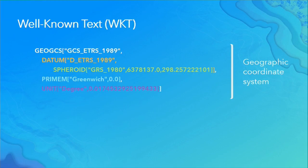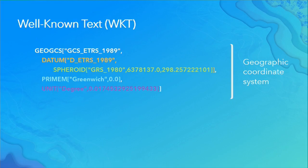In well-known text, this is a string representation of a coordinate system, and it is the only way you can specify a custom, non-predefined coordinate system. For a geographic coordinate system WKT, we see the name, a datum with its name, a spheroid with two values — the semi-axis and the flattening — which tell us the size and shape of the globe. Then a prime meridian, usually Greenwich, and a unit value. The conversion number is the value between degrees and radians, because internally all the math is done in radians.